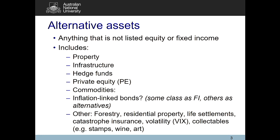In your tutorial you'll look at inflation-linked bonds. Some people consider that within their fixed income weight, and I tend to be one of those. Others group it as part of their alternative asset class. It doesn't really matter — you can consider it an alternative if you want, or part of fixed income. But if a client tells you to view it a certain way, you should be consistent. I think it shares more attributes with fixed income than with alternatives.